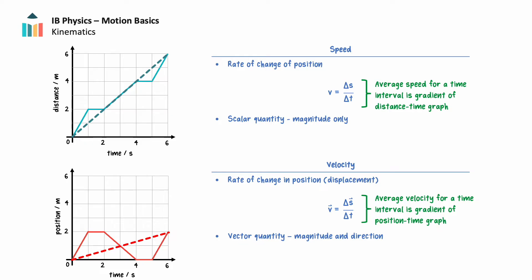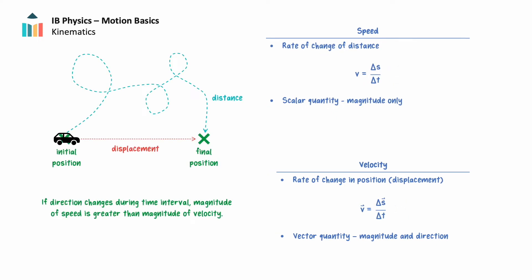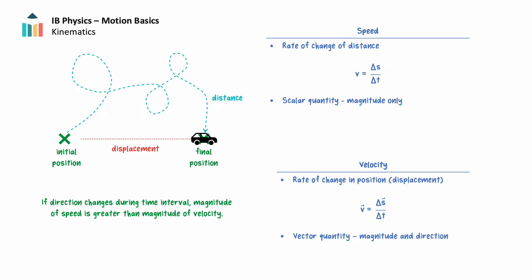Graphically, we can clearly see that the magnitude of the average velocity for the journey is lower than the average speed for the same journey, because the gradient of the average velocity line is less steep than the gradient of the average speed line — the distance traveled is greater than the displacement for the same period of time. If the direction of motion changes during a time interval, the magnitude of the average speed will be greater than the magnitude of the velocity over that time interval, because velocity can be positive or negative, whereas speed can only be positive.